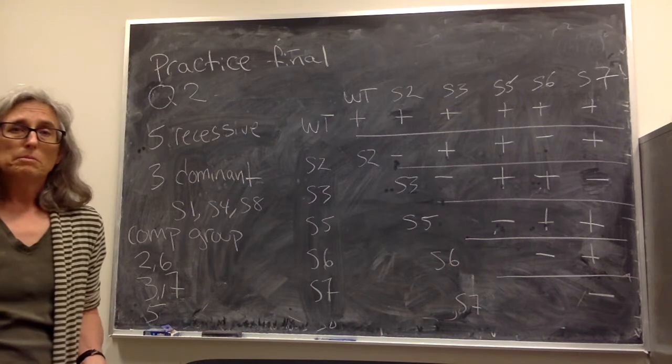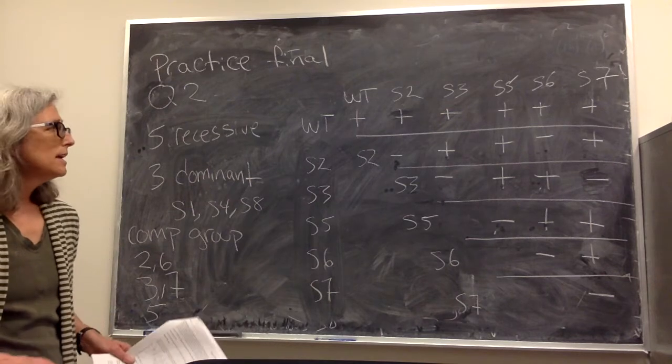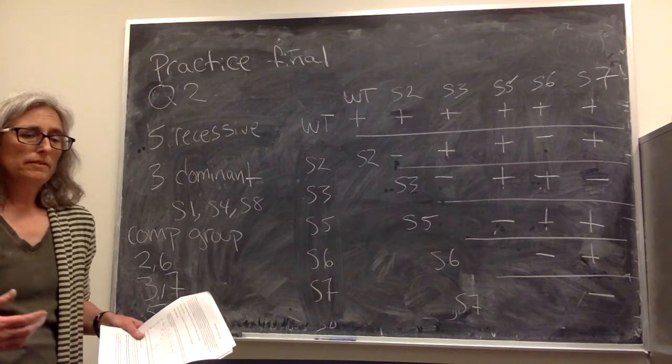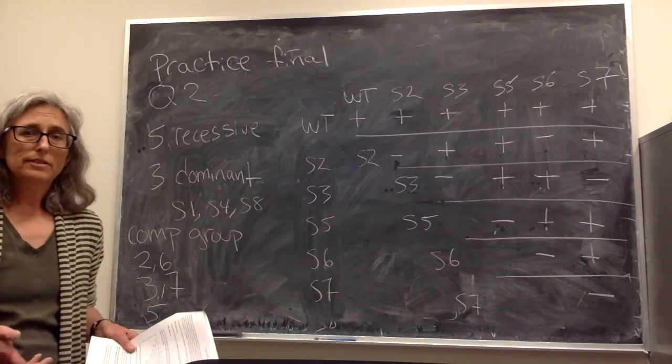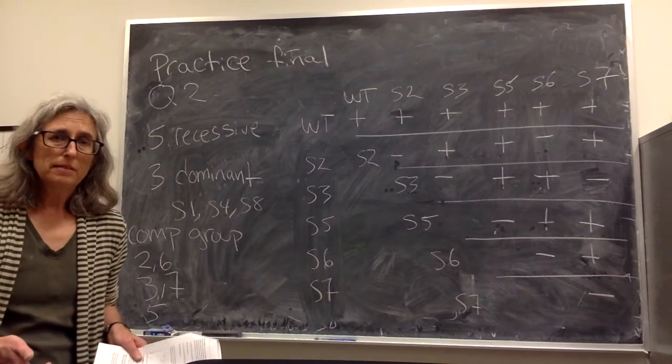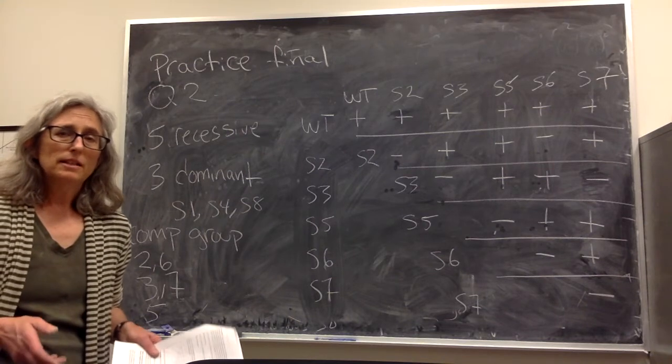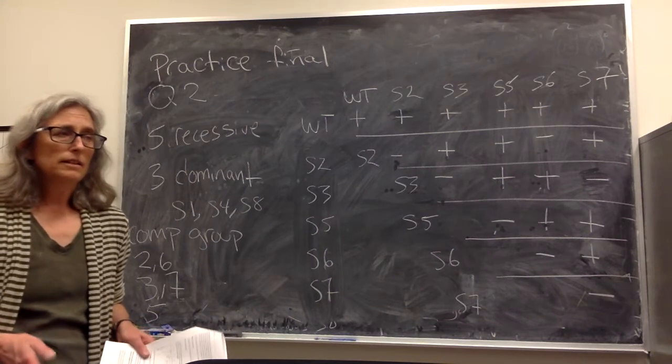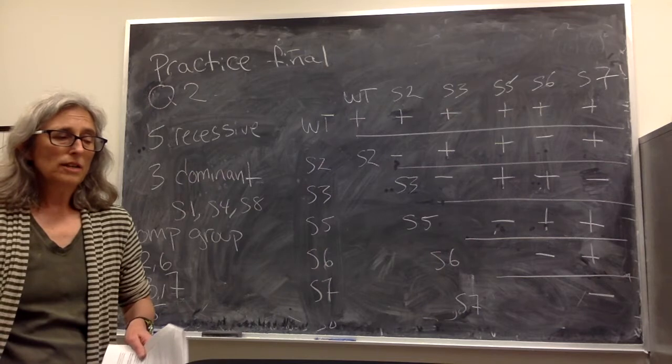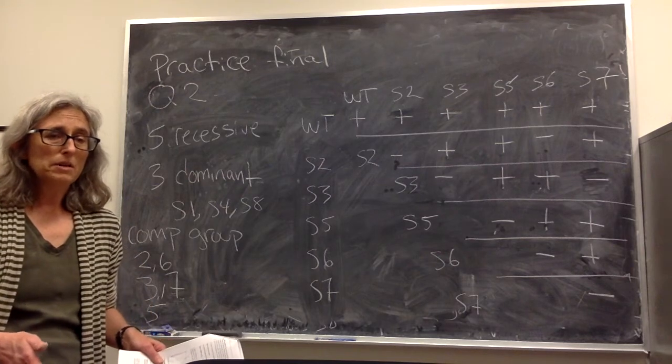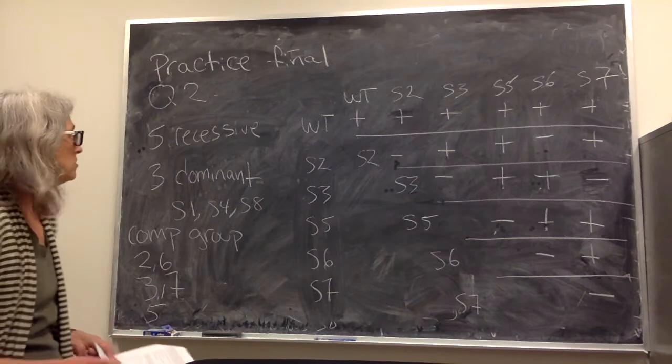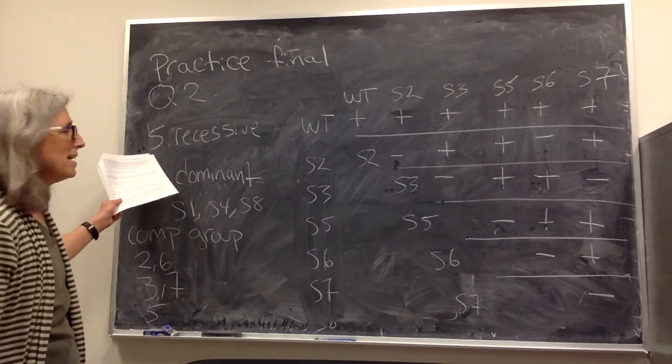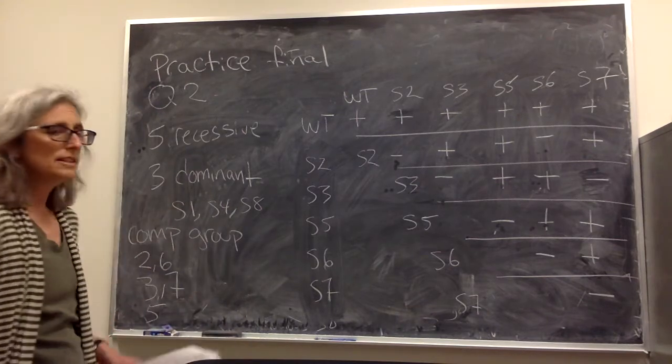This is a complementation test in a sense. If the heterozygotes give a wild type phenotype then that means your mutation is recessive. By converse, if you cross it and you get the mutant phenotype then your mutation is dominant. And so in this particular screen that you did you identified five recessive mutations and three dominant mutations.